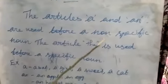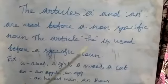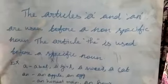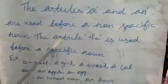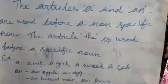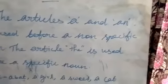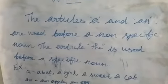The articles a and an are used before a non-specific noun. The article the is used before a specific noun. What are articles? An adjective is a and an and the, and they are usually called articles.